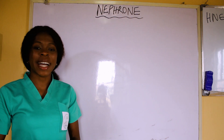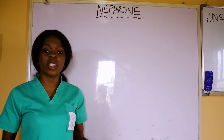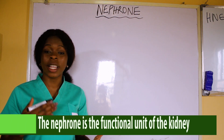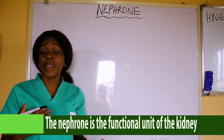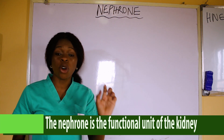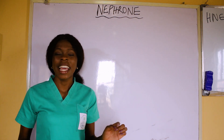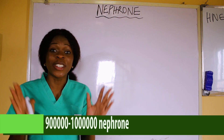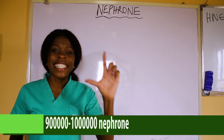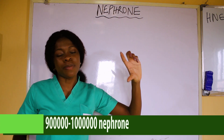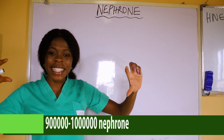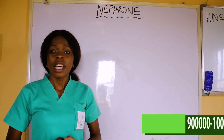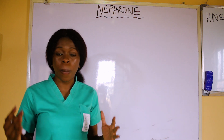Welcome back. Today we are going to be talking about the nephron. The nephron is the functional unit of the kidney. Each kidney is made up of 900,000 to 1 million nephrons. Your left kidney is made up of 900,000 to 1 million nephrons, and your right kidney is made up of 900,000 to 1 million nephrons. Now let's take you to the diagram of the nephron.